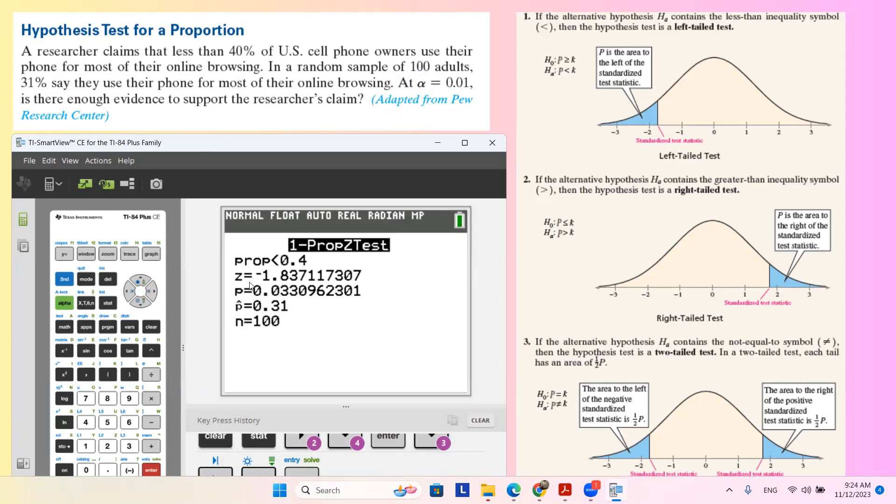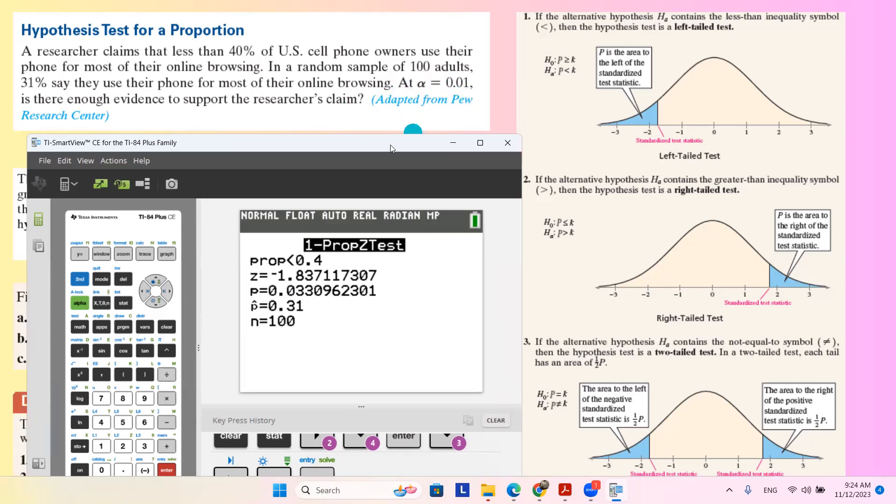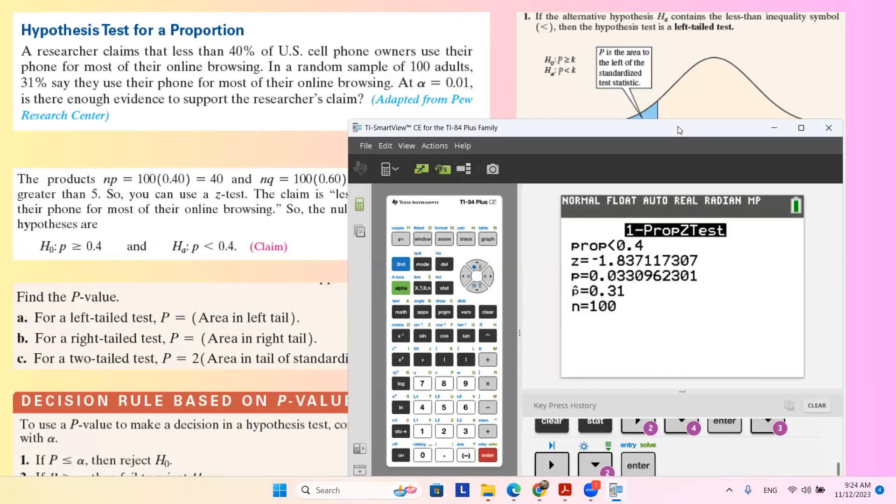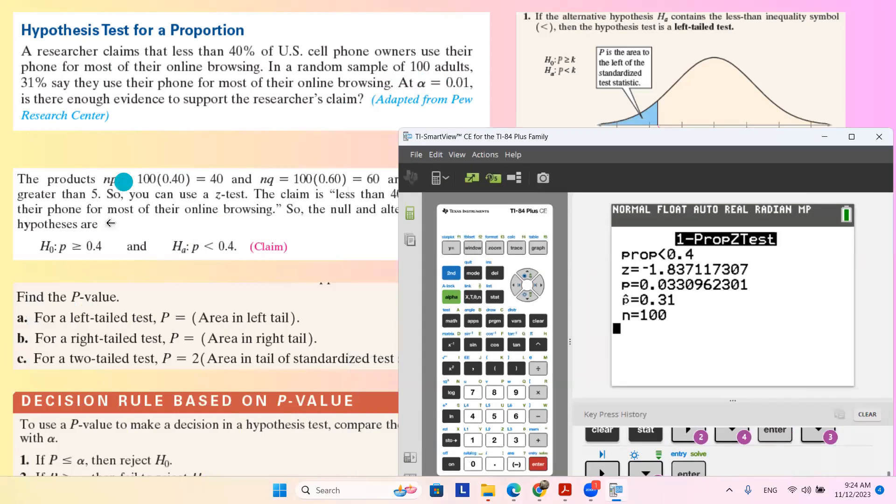When you do the calculation, the standardized test statistic is negative 1.84. Your p-value related to this Z is about 3%. 3% is more than 1%. So since 3% is more than 1%, you're going to say that we fail to reject the null hypothesis or we support the null. So when you support the null, it means that you reject the alternative hypothesis or you reject the claim.